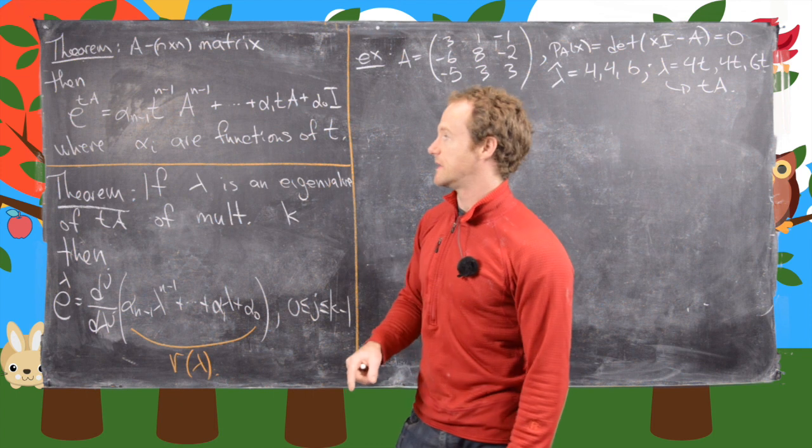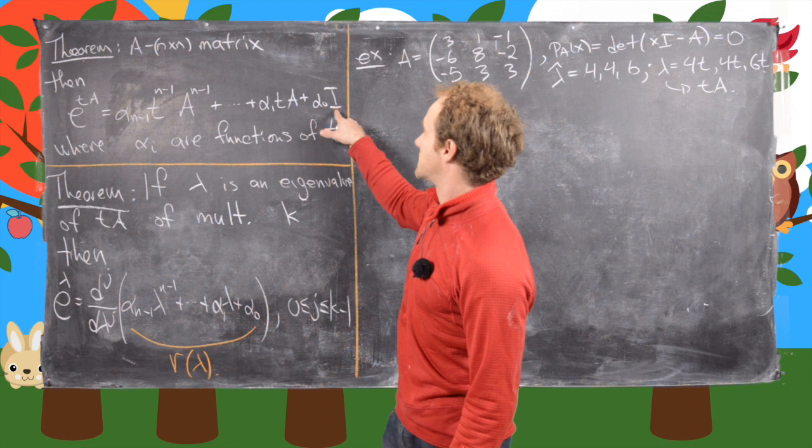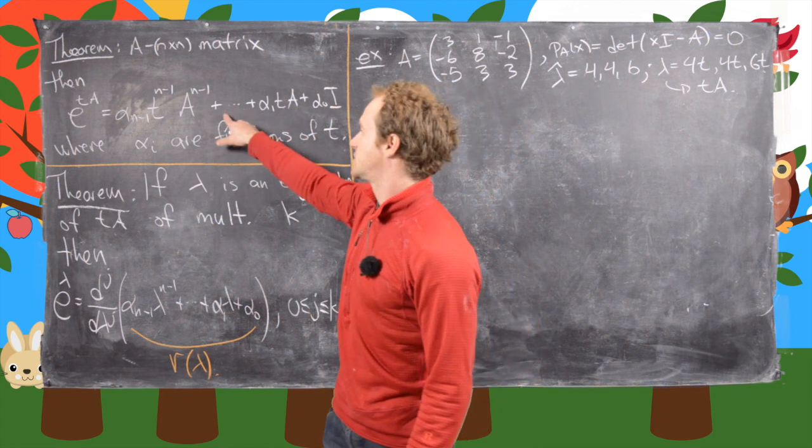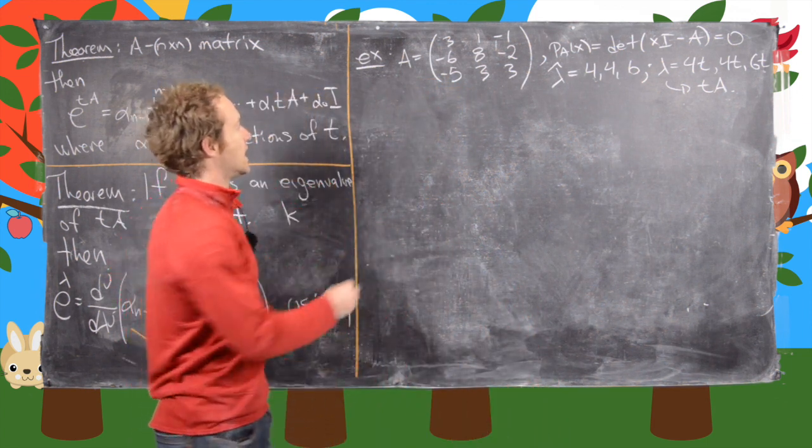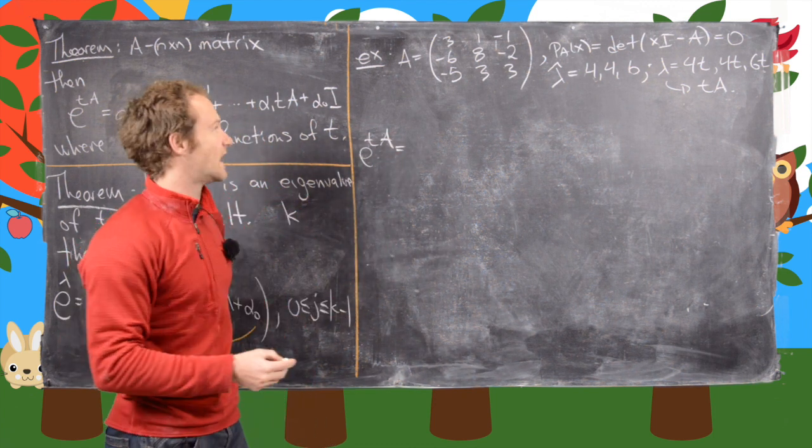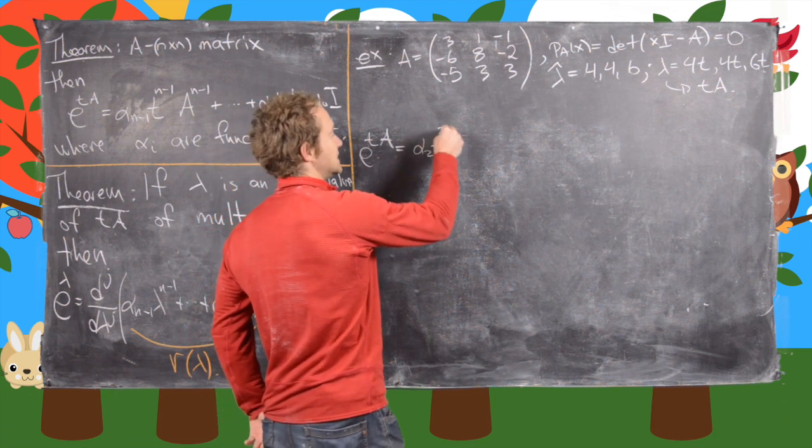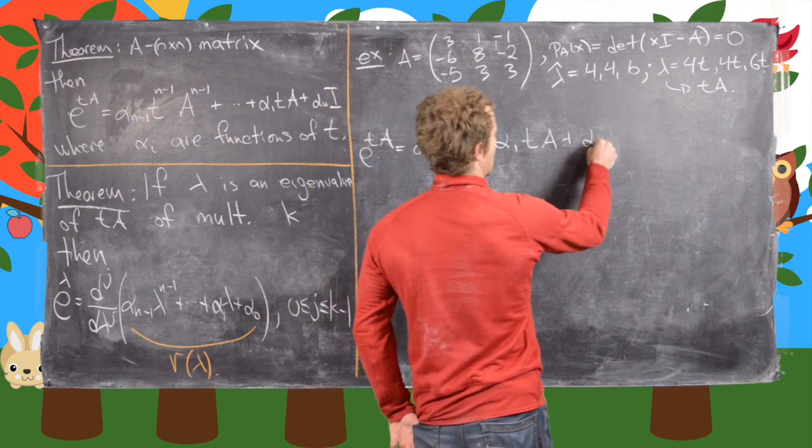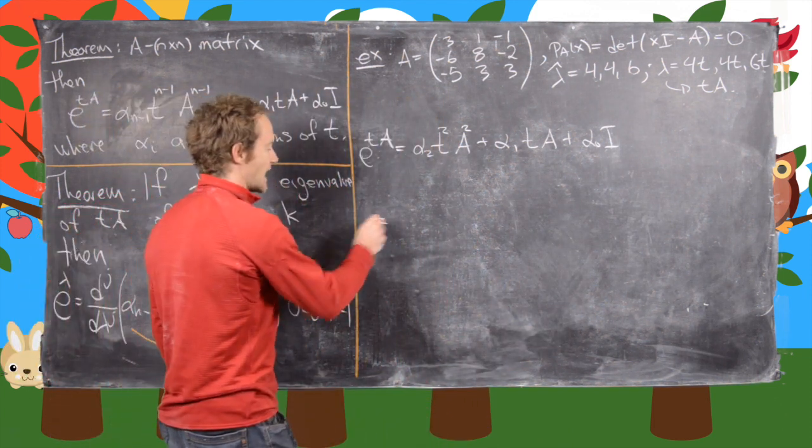up here says that we can write the matrix exponential e to the tA as alpha_0 times the identity, alpha_1*t times A, and then alpha_2*t^2 times A^2. So that means we only have a quite short sum in order to find the matrix exponential of this thing. So we have alpha_2*t^2*A^2 + alpha_1*t*A + alpha_0 times the identity matrix. Okay, so I'll write that out,